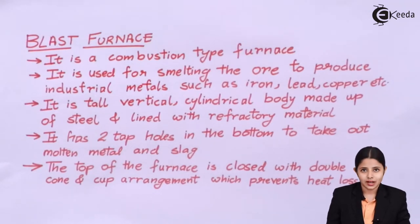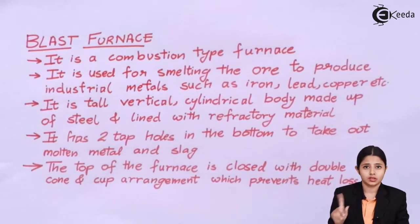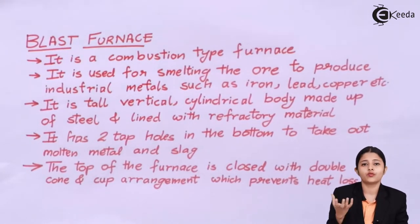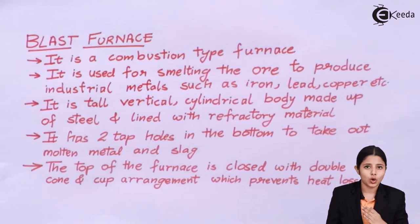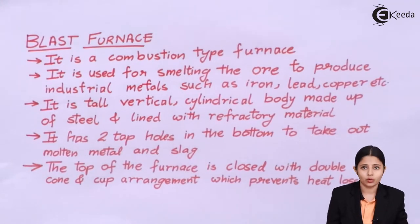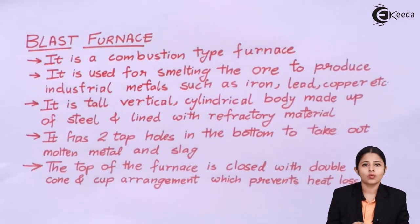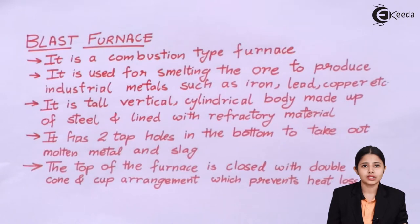Once the entire process is done, two things are going to come out of the blast furnace. The first thing is the pure molten metal, which we want and for which the entire process is being done. The second thing is slag — slag is nothing but all the impurities and all the waste which were remaining in it. For these, there are two holes in the bottom of the blast furnace: one for the molten metal and the second one for the slag.